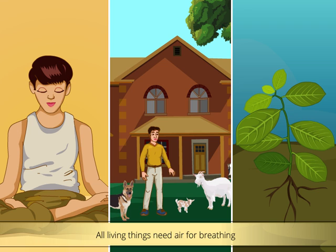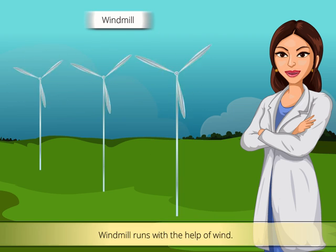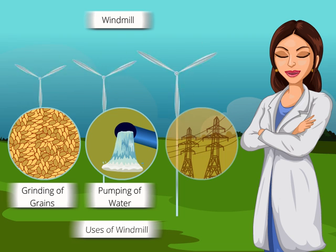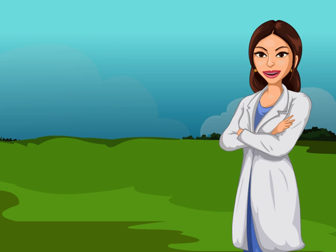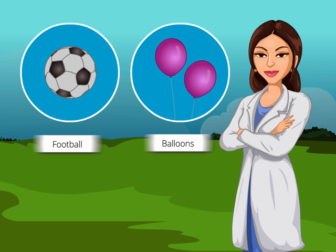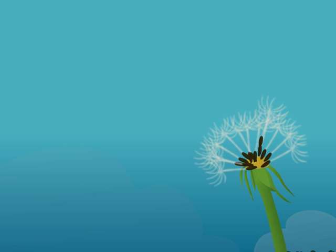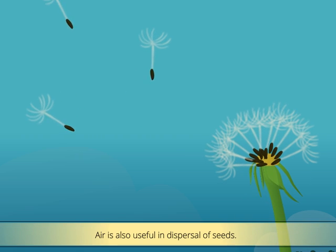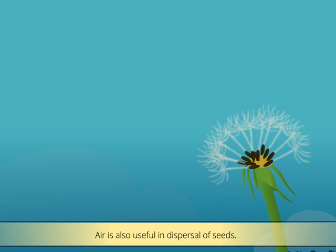You must be thinking that we need air only for breathing, but it is not true. There are many other uses of air. Have you ever seen a windmill? Windmills run with the help of wind. People use windmills for grinding grains, pumping of water and power generation. We also need air for burning things. What is there in your football and even balloons? Yes, air! Air is used to fill footballs and balloons. You might have seen some seeds of plants flying with the wind. Thus, we can say that air is also useful in the dispersal of seeds to different places.